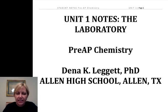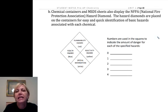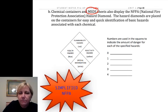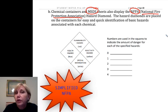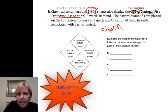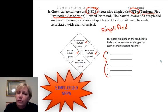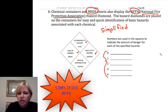Hi and welcome to Allen High School. We're talking about lab chemicals and chemical safety. There are a couple of ways that chemical safety is communicated. We're going to talk about an MSDS sheet, but these MSDS sheets often show something very similar to an NFPA diamond. NFPA stands for National Fire Protection Association, and they've developed this diamond that gives us a very quick look at the hazards a chemical may have. We're going to give you a simplified version, just to give you the broad general at-a-glance idea.